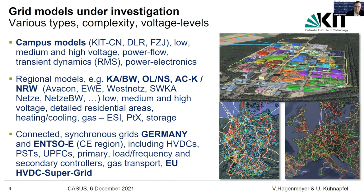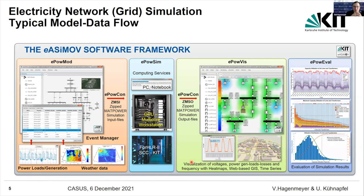At the regional level, low, medium, and high voltage are interlinked with detailed residential areas, including sector coupling to heating, cooling, and gas. At the national level, there are large-scale grids — the electrical synchronous grids of Germany and the NCE region of Europe — including HVDC lines, phase shift transformers, and uniform power flow controllers. This supports the energy transition with primary and secondary controllers, gas transport, and potentially an HVDC supergrid of Europe.